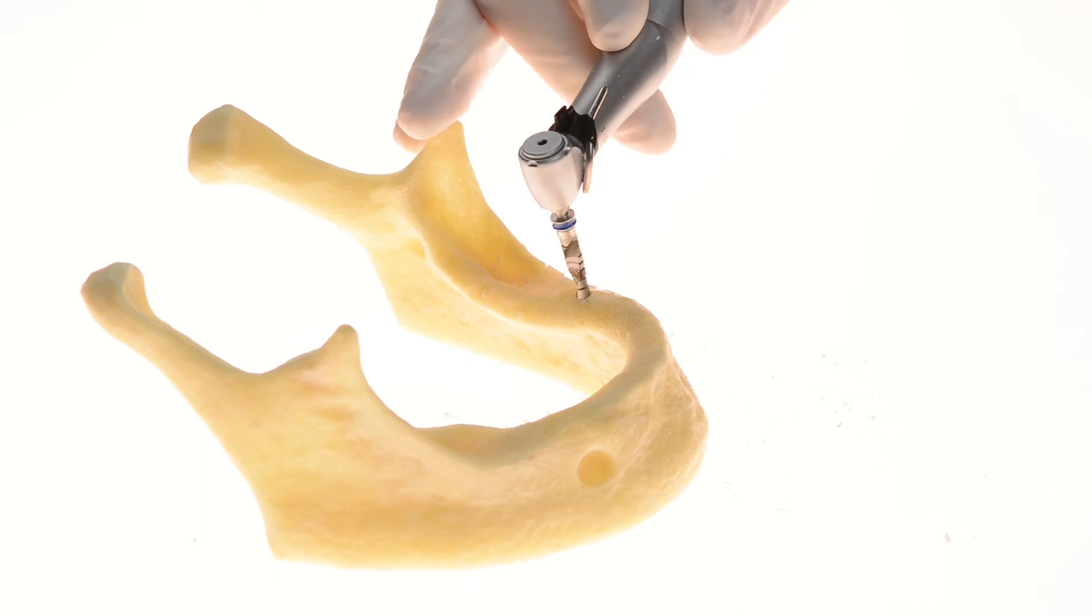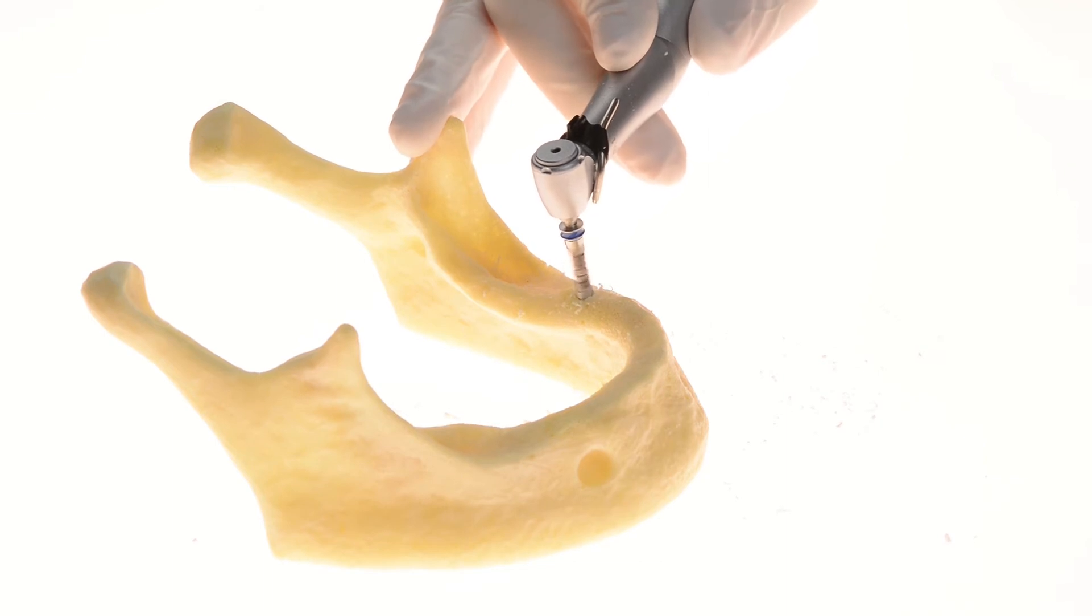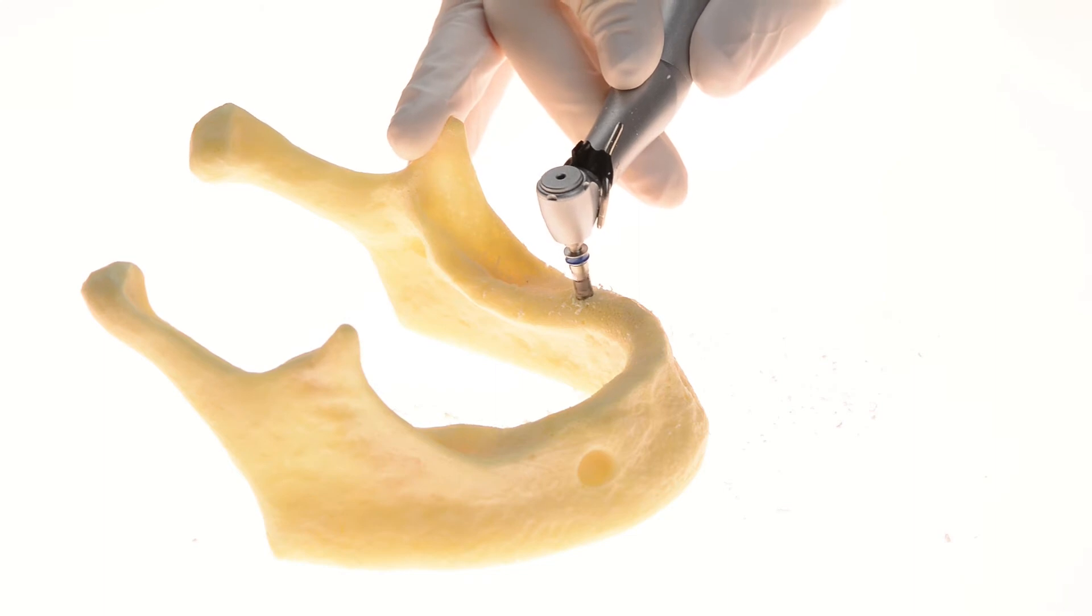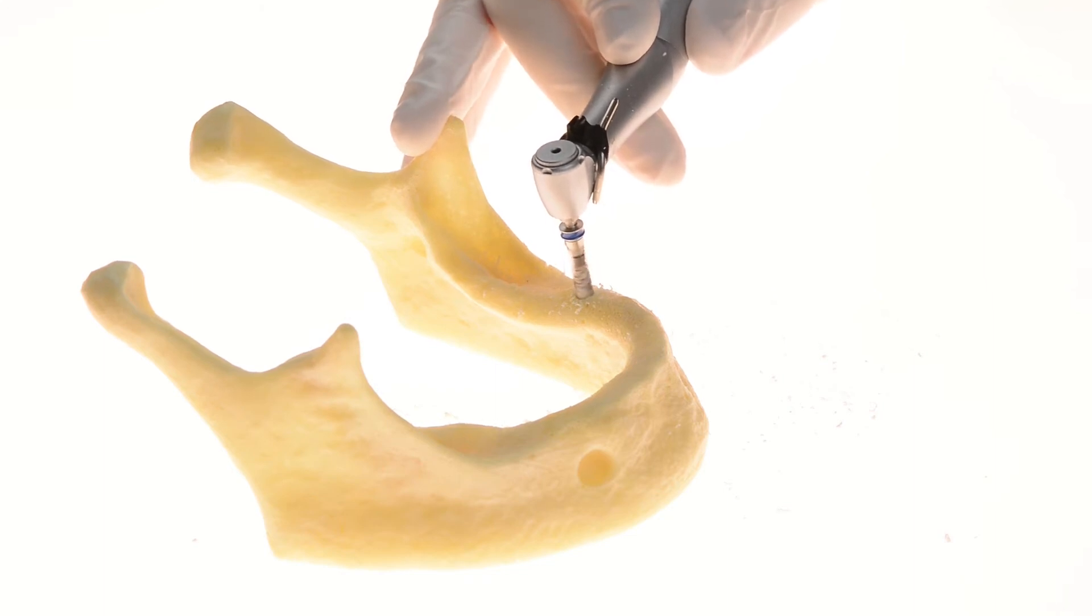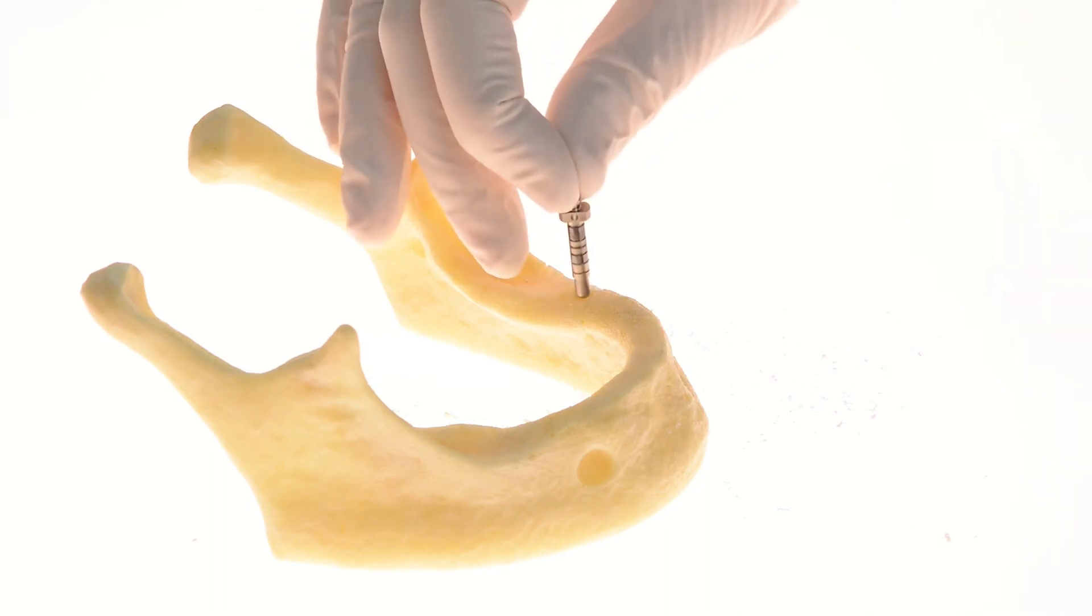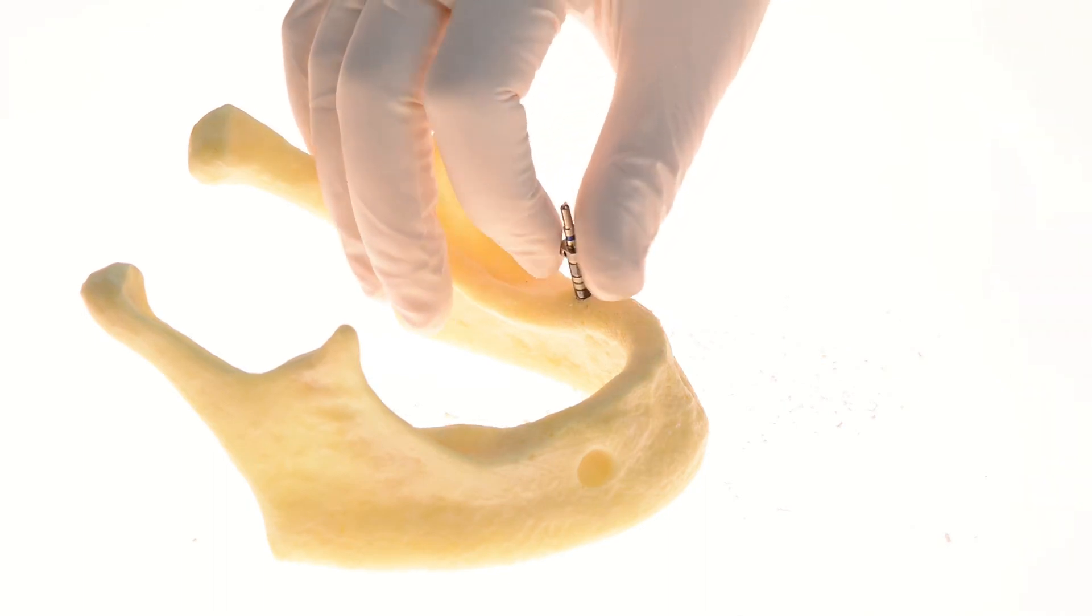A second step drill is used to widen the osteotomy. Once again, we check our depth with the body try-in.